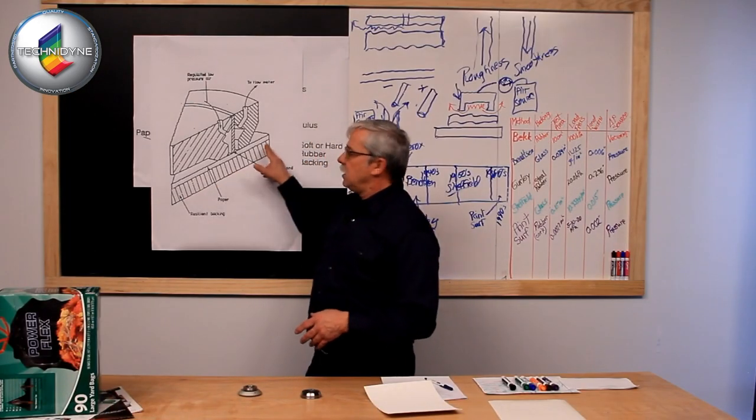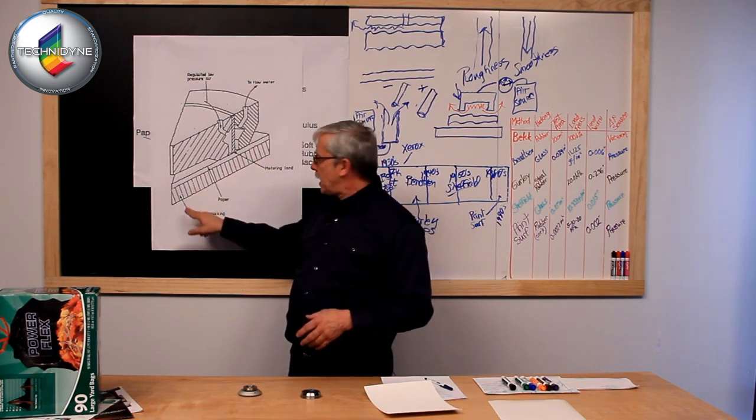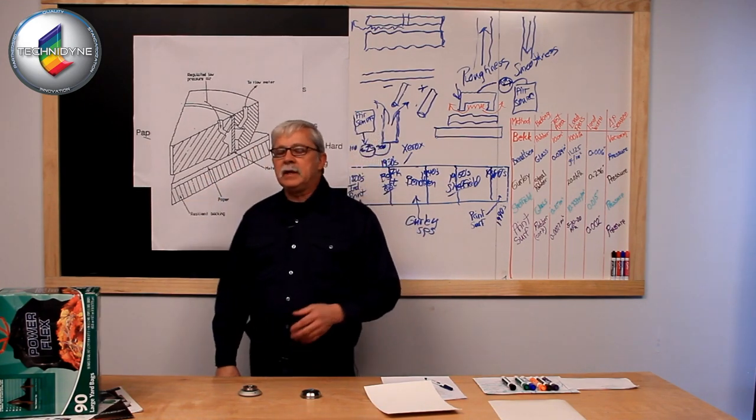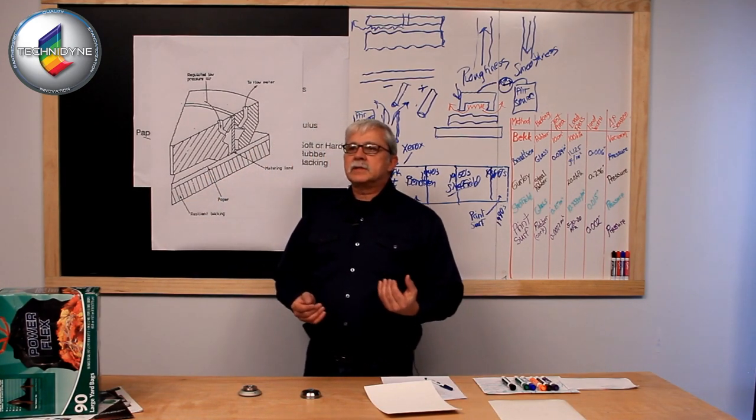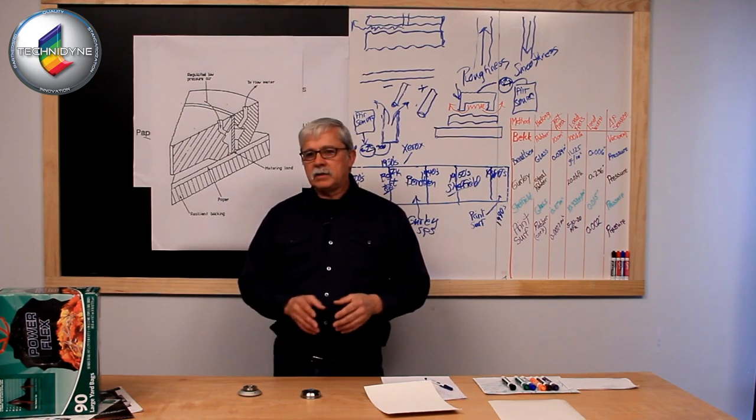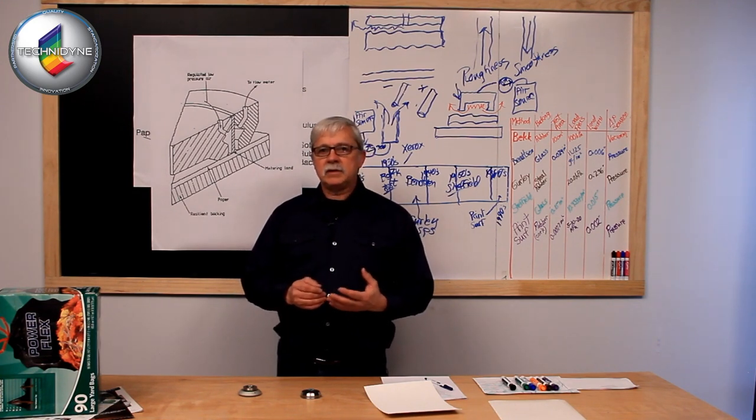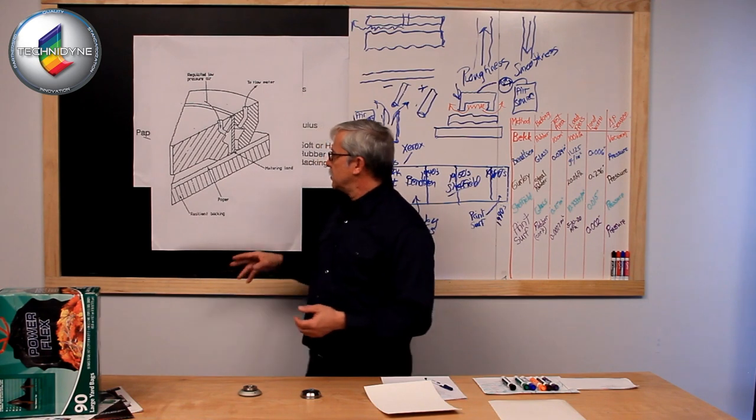He also, in his design, incorporated a resilient backing. That backing happened to be made up of the same material that is carrying the letterpress or the gravure press, the blanket, if you will, that's used in those press operations.